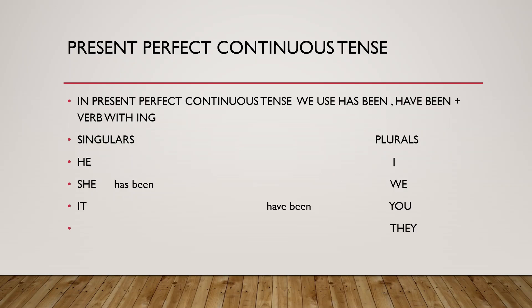Now let's talk about present perfect continuous tense. In present perfect continuous tense, we use has been, have been plus verb with ing. With singulars, for example: he has been, she has been, it has been.